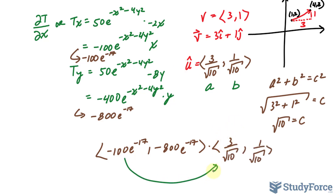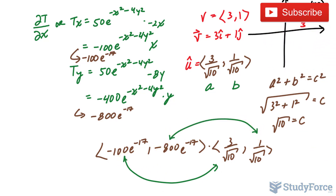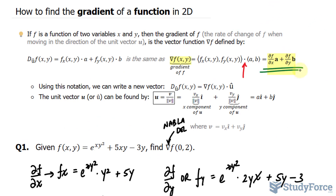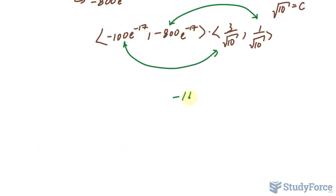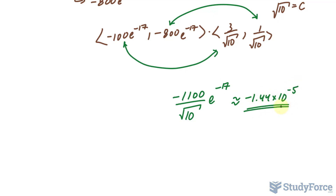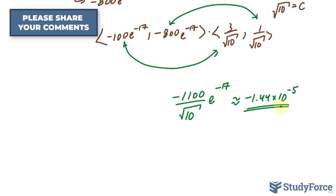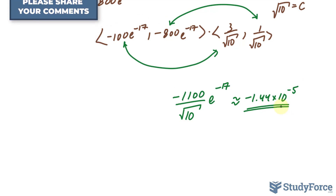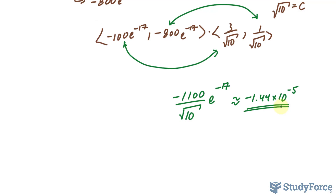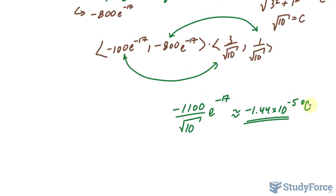We multiply the corresponding gradient and unit vector components together, then add those two products. If you do this correctly, your final result should be negative 1100 over the square root of 10, times e to the power of negative 17 — approximately negative 1.44 times 10 to the power of negative 5. This means the amount the temperature changes when we're at the point (1, 2) and moving in the direction of (4, 3), measured in degrees Celsius.